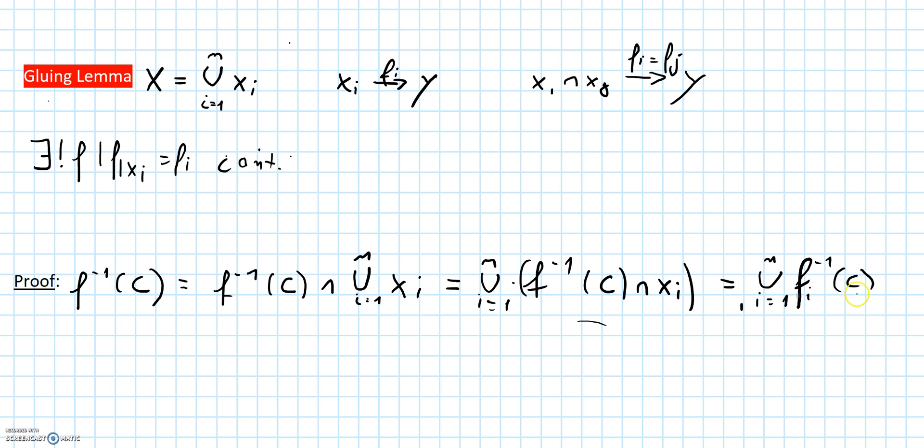So we have that this union, which is the pre-image of c under the map f, is a finite union of closed sets and thus is closed itself. And this shows continuity and finishes the proof of our lemma. Thank you for watching, see you next time.